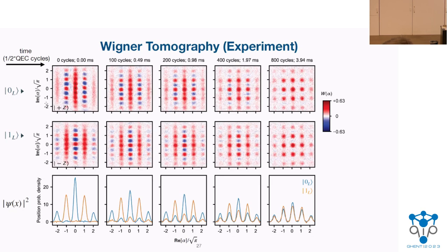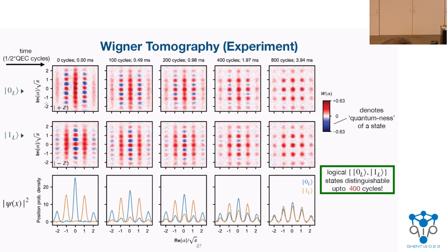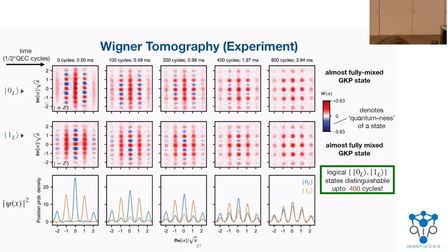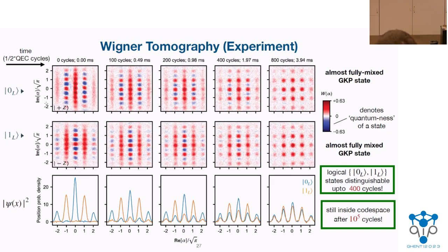We carried on this experiment for 10^5 cycles and found that after 10^5 cycles, we were still in the code space with the same grid state. This grid state is very unique to GKP states — if you see this grid-like pattern in your final Wigner function, you're in the GKP code space. So after 10^5 cycles we were still in this code space, and I have evidence for it.